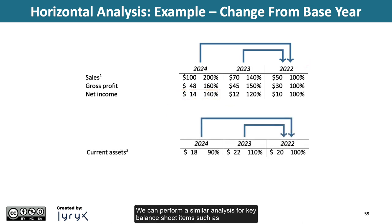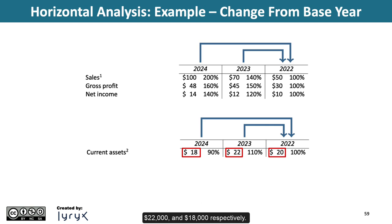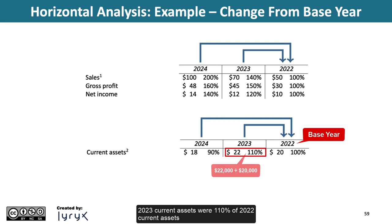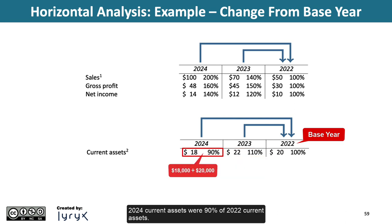We can perform a similar analysis for key balance sheet items such as current assets, long-term investments, and total assets. For Big Dog, current assets for 2022, 2023, and 2024 were $20,000, $22,000, and $18,000, respectively. Using 2022 as the base year, 2023 current assets were 110% of 2022 current assets, calculated as $22,000 divided by $20,000. 2024 current assets were 90% of 2022 current assets.